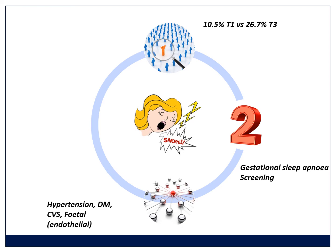If obstructive sleep apnea is present, there are lots of associations with hypertension, diabetes, cardiovascular abnormalities, and fetal changes because of the endothelial activation that occurs. When we manage these patients in regional and tertiary centers, we use CPAP perioperatively, put them in high care, and try to do opioid-free anesthesia — often using epidurals or intrathecal morphine. But these are not options available at district hospital level.